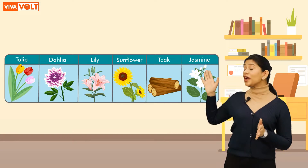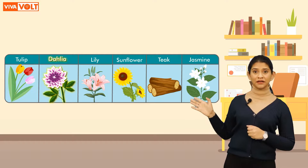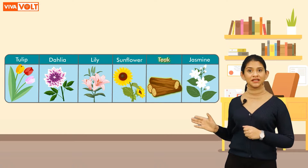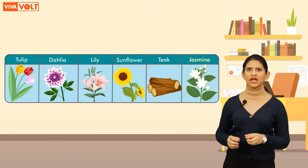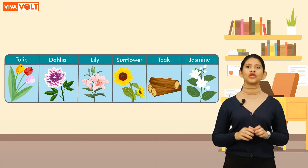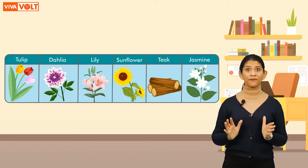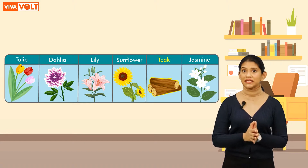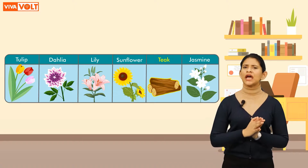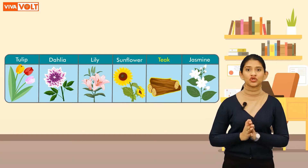Now look at these things on your screen: tulip, dahlia, lily, sunflower, teak, and jasmine. Can you spot the odd one out? All these things except for teak are flowers — teak, on the other hand, is a type of wood. Let me give you some more questions based on classification to solve.